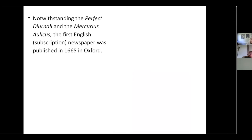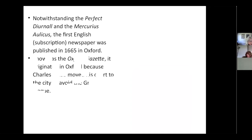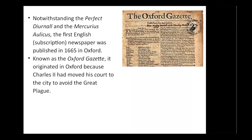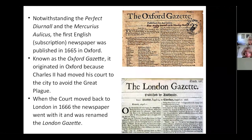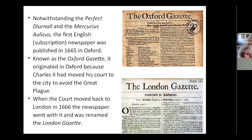In this country, if you ignore the Perfect Diurnal and the Mercurius Aulicus, the first actual newspaper paid for by subscription was published in 1665 in Oxford — known as the Oxford Gazette. It originated in Oxford because Charles II had moved his court there to avoid the great plague then running in London. When that finished and the court moved back to London, the Oxford Gazette simply moved back with it and became known as the London Gazette, which is still being published today.